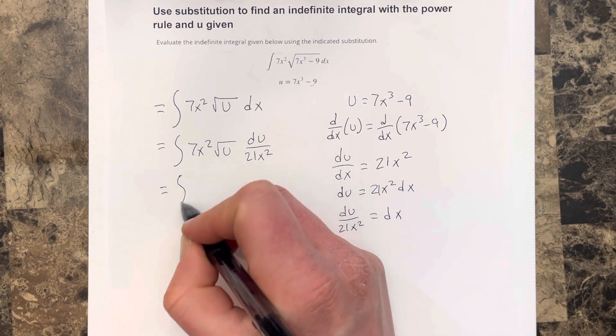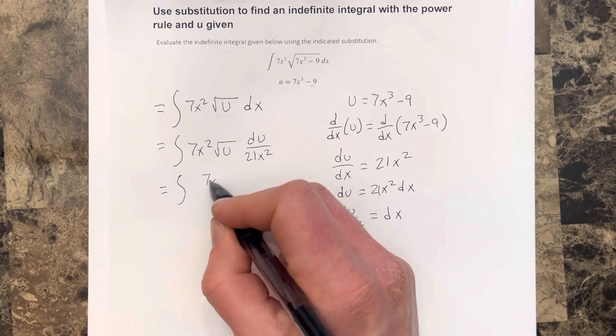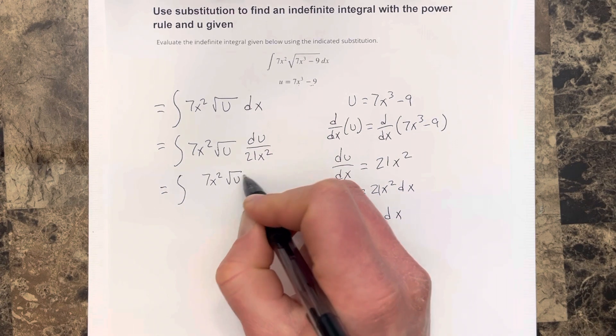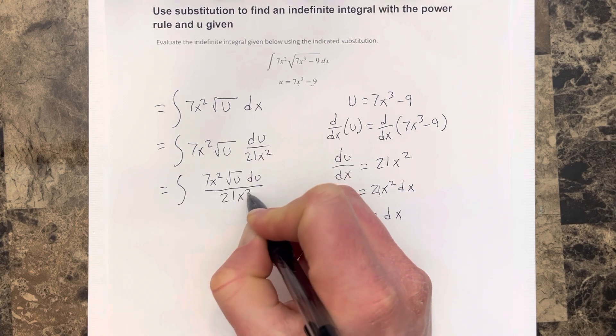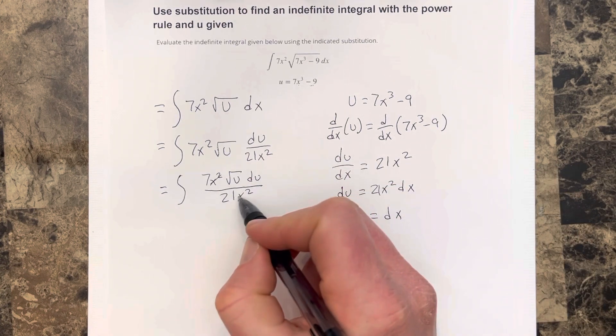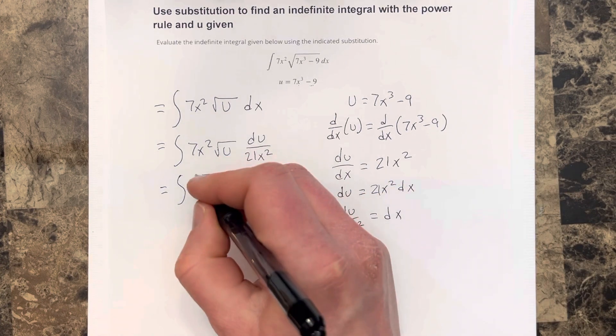And I get equals integral. This would be 7x squared root u du in the numerator over 21x squared. You can see the x squareds cancel. I get a 7 that cancels to a 1.